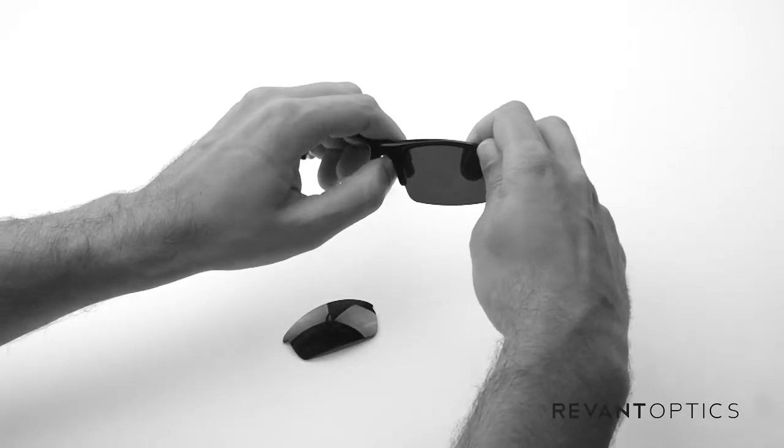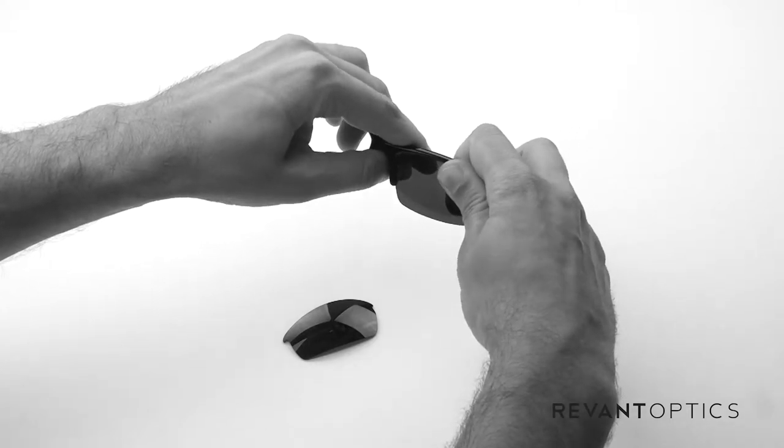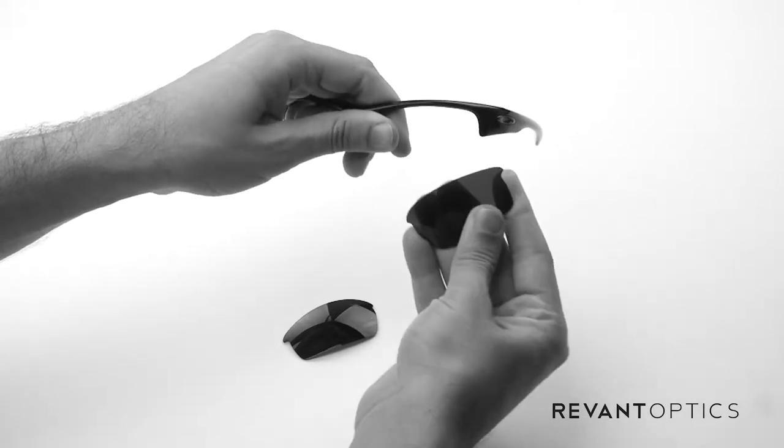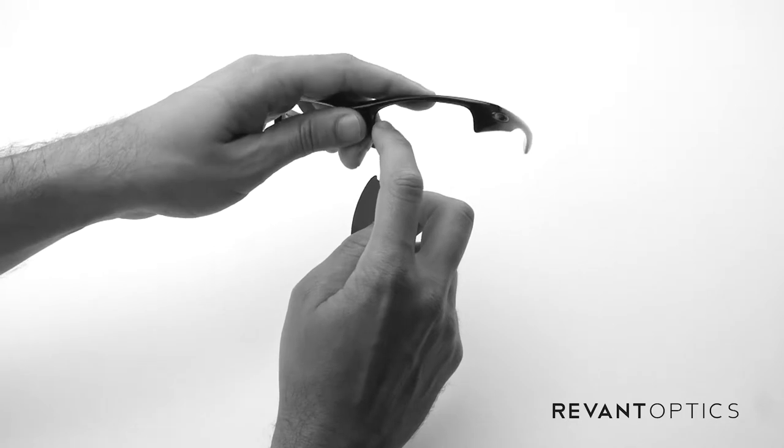So go ahead and do that to this side as well. Take your thumb, stick it in the middle there and pull up, and then push down on the lens and up on the outside. And you'll see, again, it's just this groove that runs along here that keeps it in place.